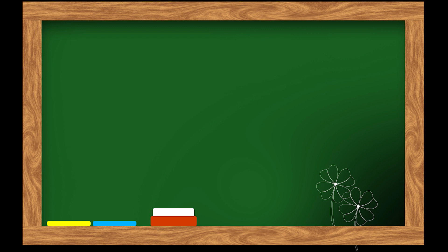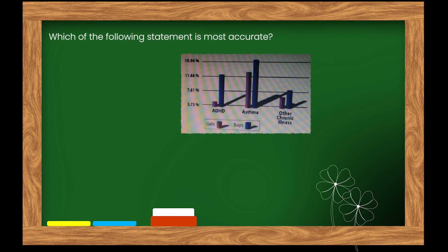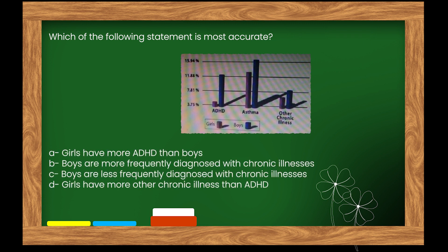Here is our next question. Which of the following statements is most accurate? Options: A. Girls have more ADHD than boys. B. Boys are more frequently diagnosed with chronic illnesses. C. Boys are less frequently diagnosed with chronic illnesses. D. Girls have more other chronic illnesses than ADHD.